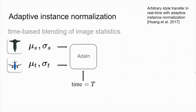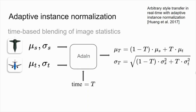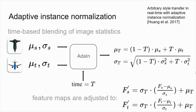To further improve our system, we incorporate an adaptive instance normalization unit designed to blend the image statistics of the two inputs according to the desired timestamp. The mean and standard deviation of the feature maps of the source and target are computed, and are blended as a function of the time t. The feature maps of the two are then adjusted based on the blended statistics.